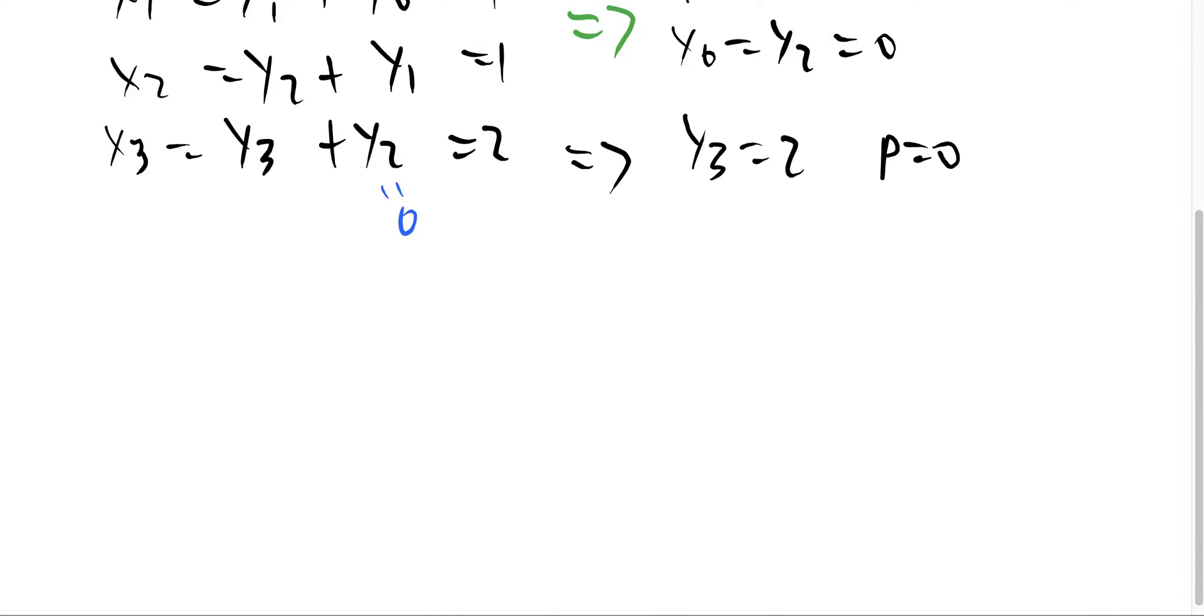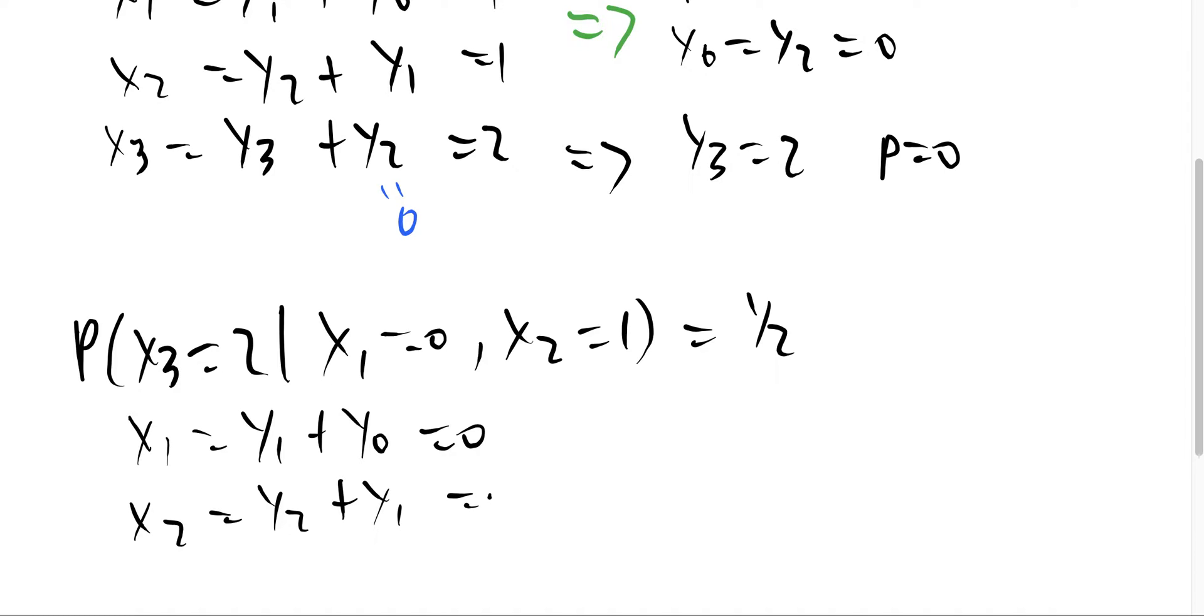Similarly, we'll pick other values that come out to a different probability to show another example. Let's compute P(x3=2 | x1=0, x2=1). This probability is 1/2. I'll show you why.